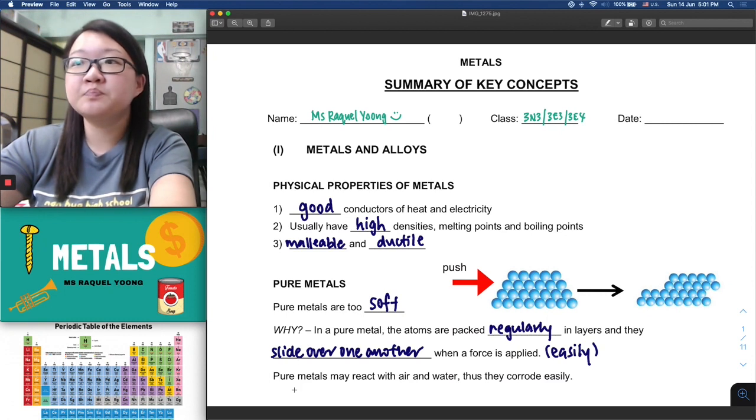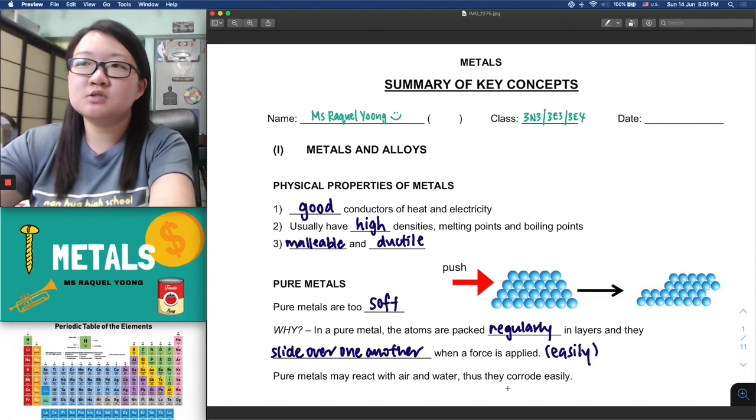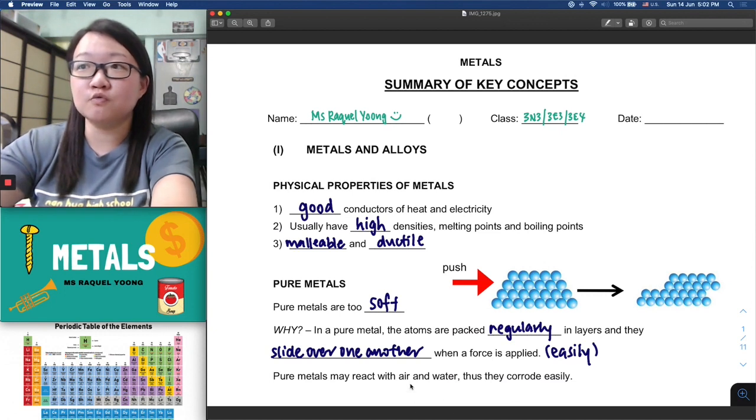This is what happens at the atomic level, and what we observe in real life is that they are soft and can be cut easily. In terms of reactivity, pure metals react readily with air, oxygen, water, and corrode very easily. If they are freshly cut you will realize they are very shiny, but they will readily become gray in color because that means it has been corroded.